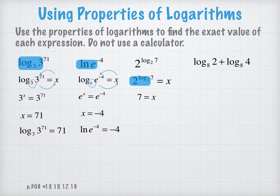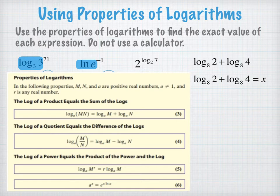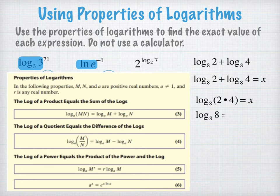In this last example, it's a good idea to refer back to our properties because we see here that we can apply the first property but kind of backwards. The log of a product equals the sum of the logs. Here we have the sum of log to the base 8 of 2 plus log to the base 8 of 4. So what we can do is write this as a single logarithmic expression: log to the base 8 of 2 times 4. So that's log to the base 8 of 8.